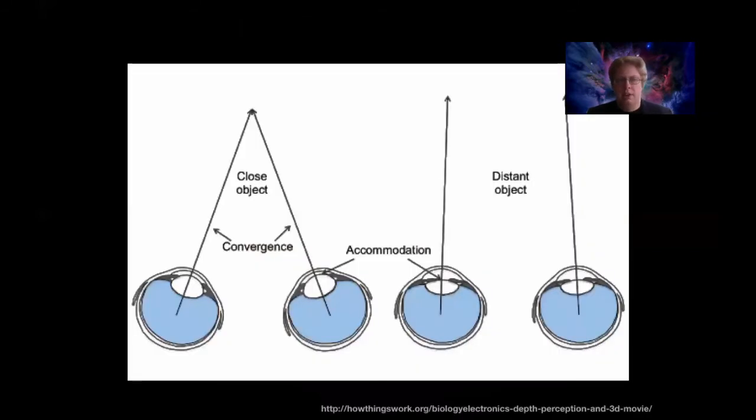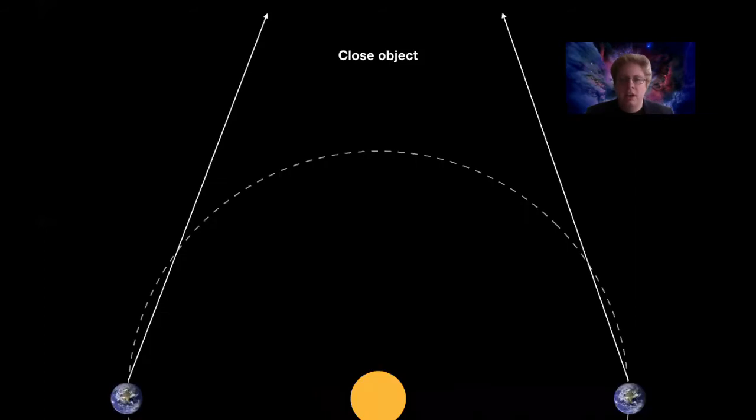So once we have a distance in our solar system we can start using some of the tricks that our brain uses to measure distances but in an astronomical context. So we can in fact use this idea of depth perception to measure the distances to astronomical objects. But instead of only looking at the difference in angle when we look from one of our eyes to the other part of our eye, we can use the entire solar system. So imagine that you observe a bunch of stars at one time of year, perhaps in March, and then six months later the Earth has orbited around the Sun and has come to the other side.